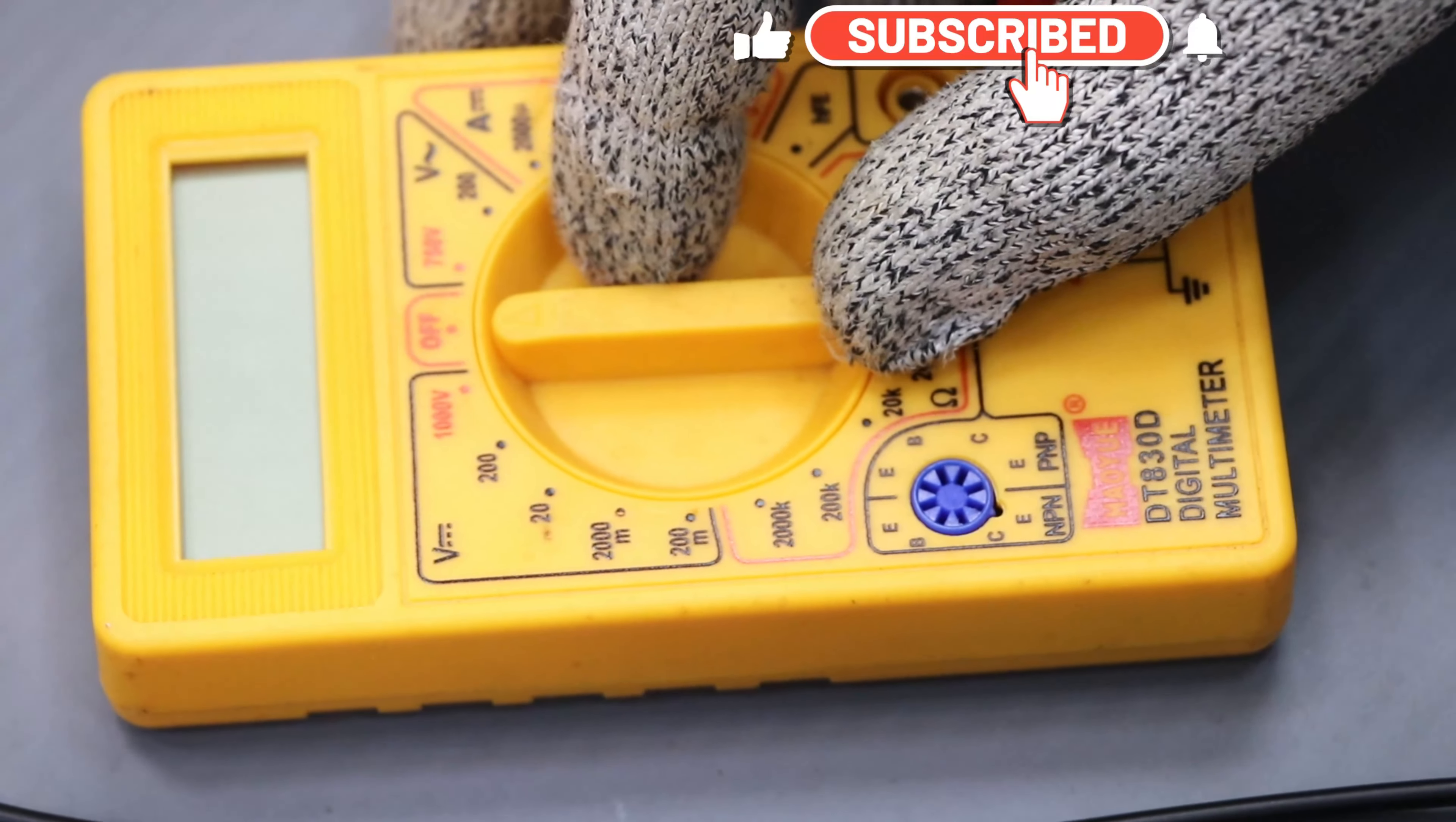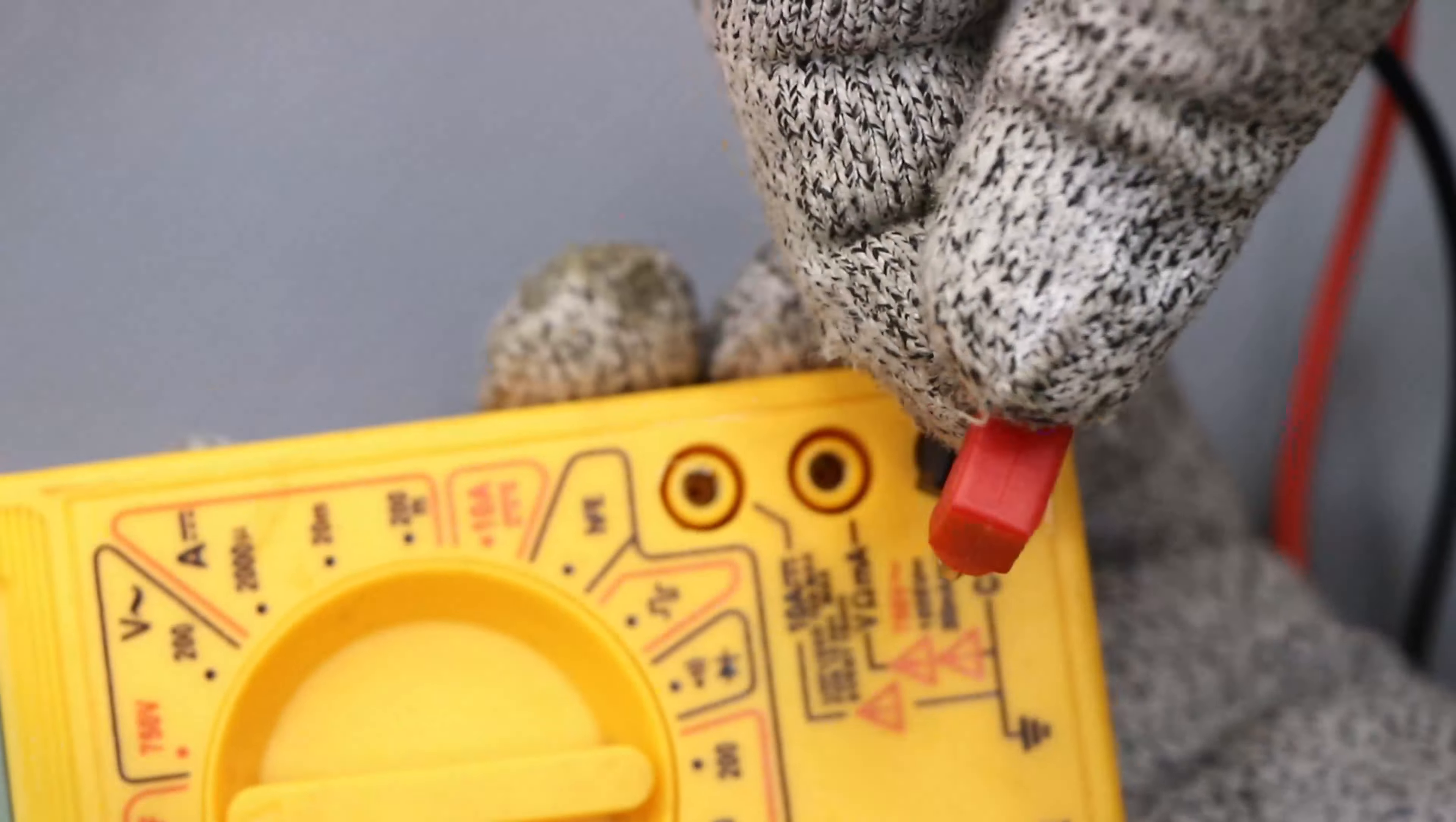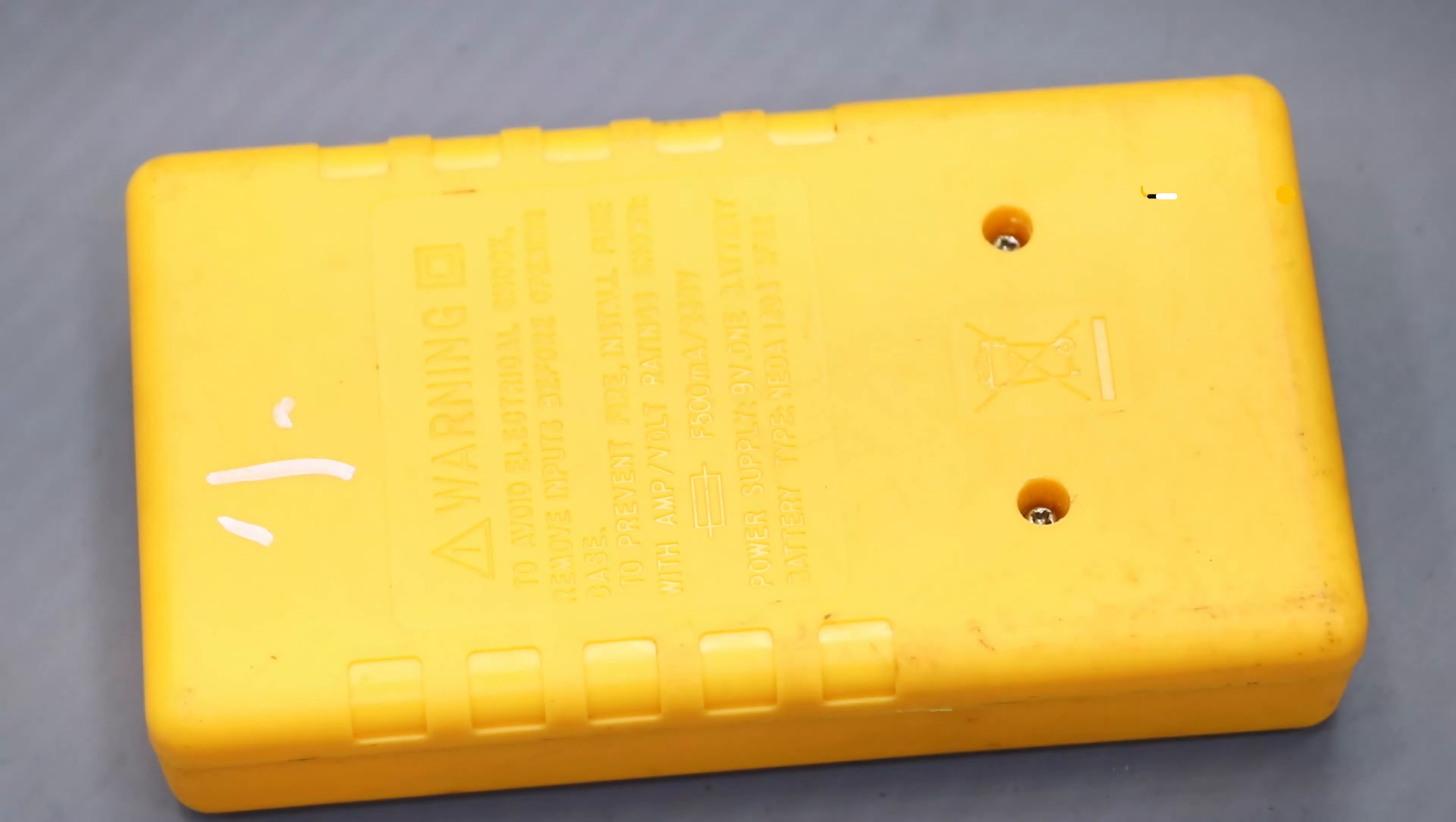If there is other fault we can look for that as well. Now you can see that it's not working, no power indication available in the LCD. Now just remove the leads. So these are the leads we use to measure lots of parameters in the multimeter. Now there are two screws you can see.